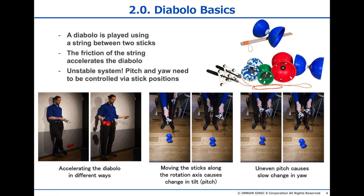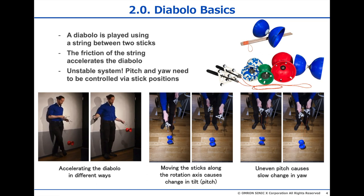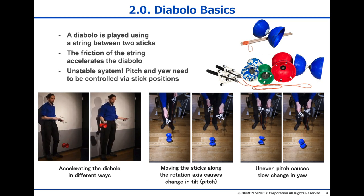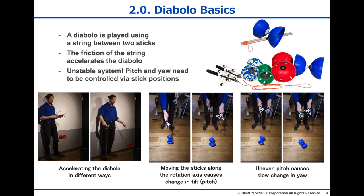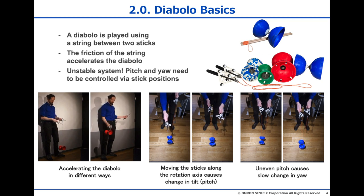To start with some basics, the Diabolo is a juggling toy that is played with a string between two sticks. The Diabolo rolls over the string, as seen in the bottom left, and the string friction accelerates it. The Diabolo is always in an unstable or metastable state. If the sticks are moved in different directions along the rotation axes, back and forth, like in the middle videos, the Diabolo starts to tilt.